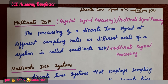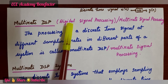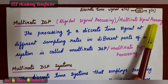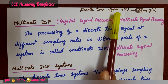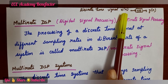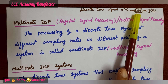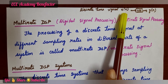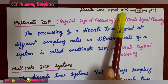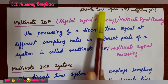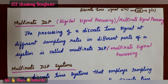Let us start with the first definition: multirate DSP, also known as multirate digital signal processing or multirate signal processing. A discrete time signal is denoted by x of n as input and y of n as output. When the input signal x of n is passed through a system of impulse response h of n, it gives y of n. A discrete time system is represented by a difference equation.